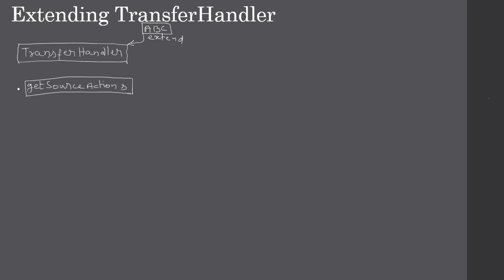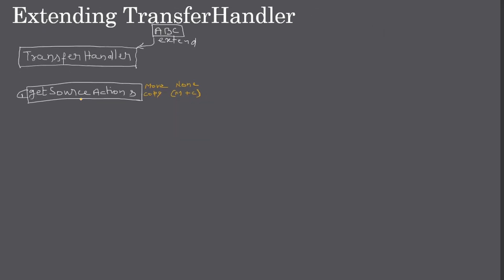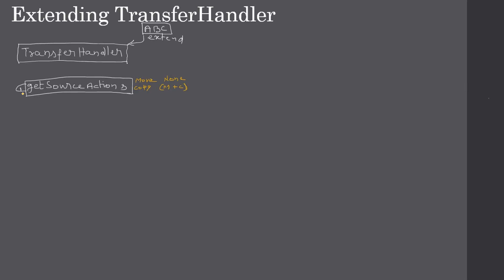The first overridable method is getSourceActions. This method tells what source operations we are supporting. We know the source actions are copy as well as move. With this method we can say what operation our class ABC is supporting — only move, only copy, none, or even both move plus copy. This method will be called first by the framework.